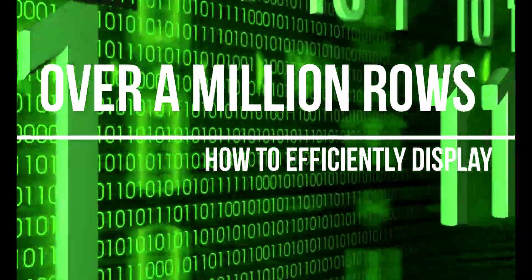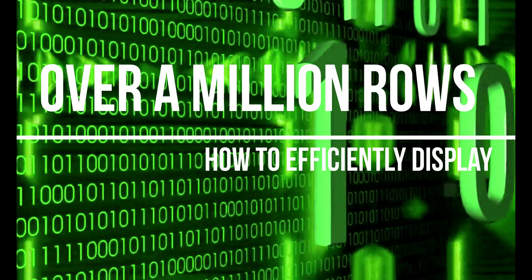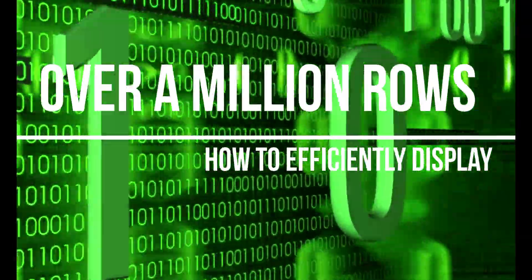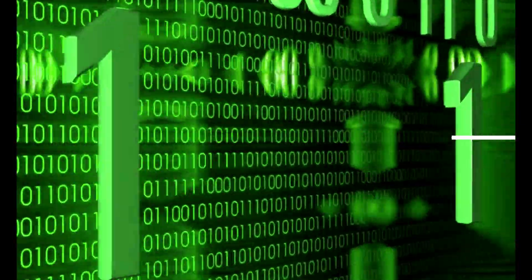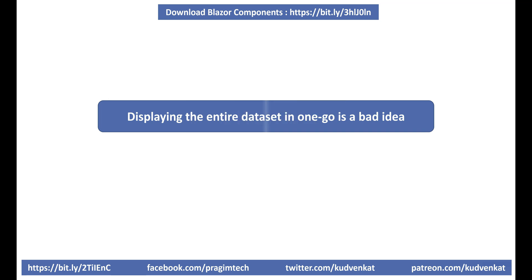Now, here's one of the very common interview questions: I have over a million rows in a database table and I want to display them on a web page — what approach would you take to efficiently display this huge volume of data? Well, displaying the entire dataset of over a million rows in one go is a very bad idea. It takes too much time to download and may explode both the browser memory as well as the rendering engine. So, depending on the application requirements and what the users are trying to achieve, there are several approaches to efficiently display huge volumes of data.